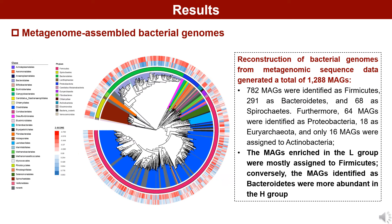We then generated a total of 1,288 bacterial genomes by metagenomic sequencing. The MAGs enriched in the L group were mostly assigned to Firmicutes. Conversely, the MAGs identified as Bacteroidetes were more abundant in the H group.